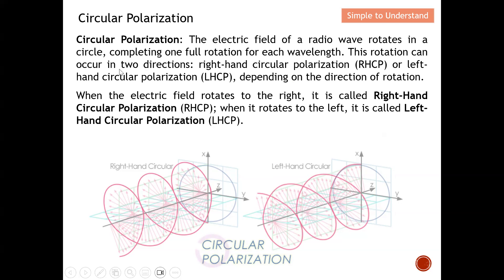The rotation depends on direction: when the electric field rotates to the right, this is what we call right-hand circular polarisation. When it rotates to the left, it is called left-hand circular polarisation. At this moment this may still not be fully clear — let me play an animation so you can understand this more clearly.